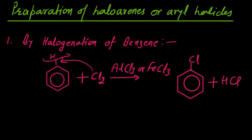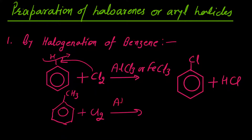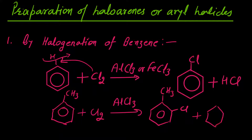यह electrophilic substitution reaction है। अगर यहां पे हम chlorine को excess में लेते हैं तो ortho-dichloro और para-dichloro benzene की preparation होती है same conditions में। अगर हमारे पास toluene है और toluene का halogenation करते हैं तो toluene के case में ortho-chloro और para-chloro toluene की formation होती है। ALCL3 Lewis acid की presence में जो formation होता है वह है ortho-chloro toluene plus para-chloro toluene।